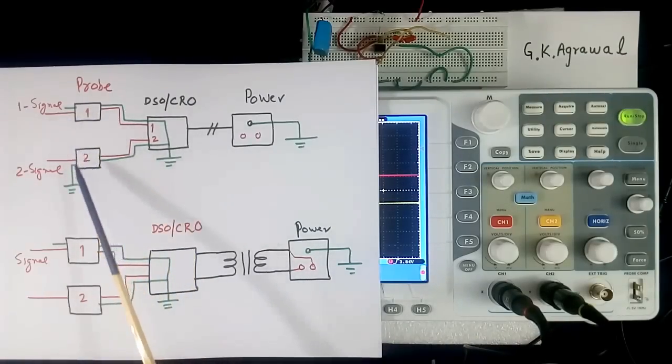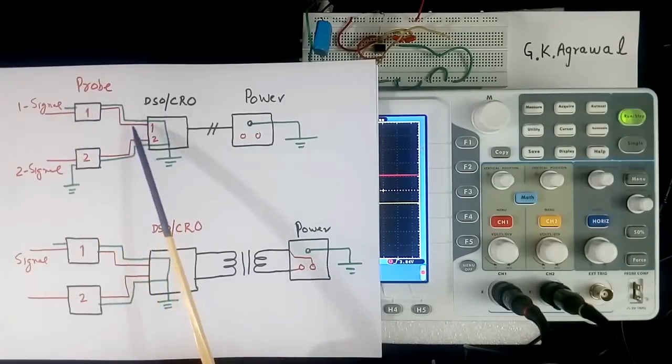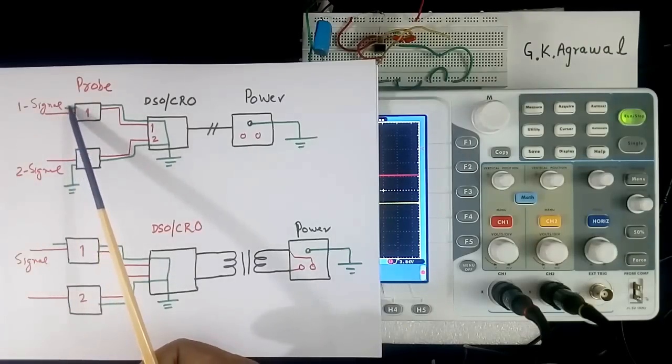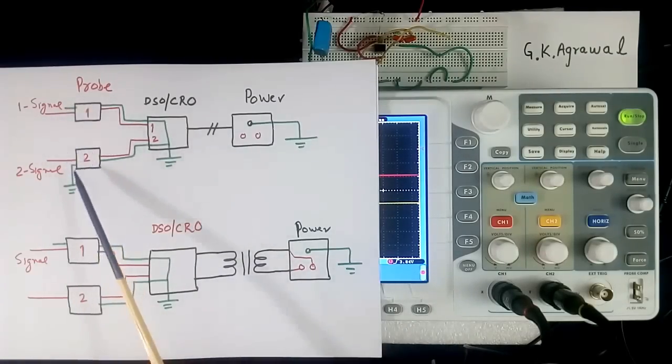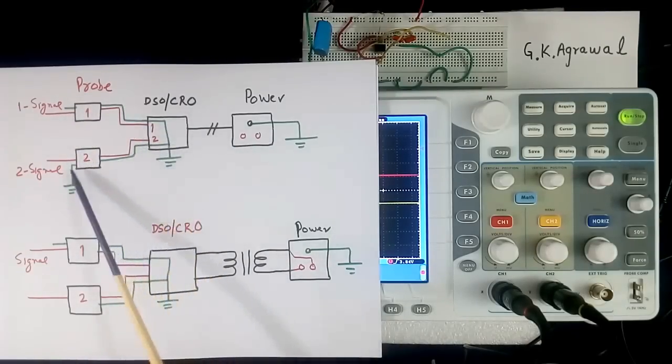These both probes have one common point, shown here in green color. This common point is shorted inside CRO. Like this. This means voltage of this point and this point should be same. It should not be different. If this is different, then shorting will be there like this.